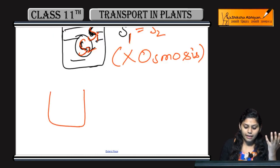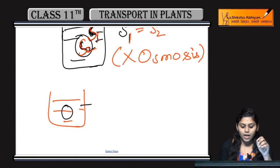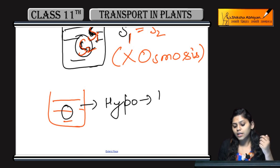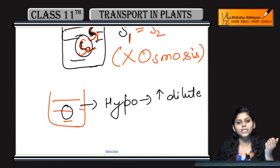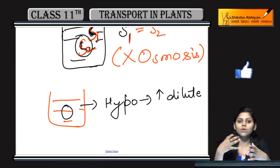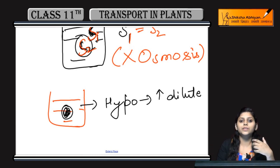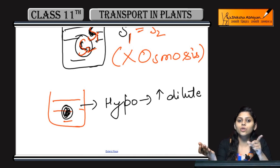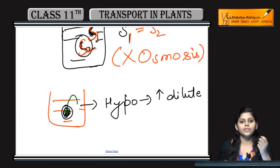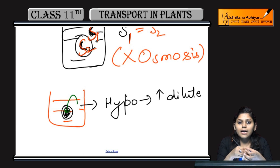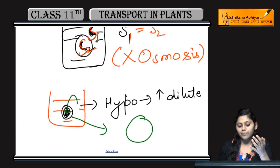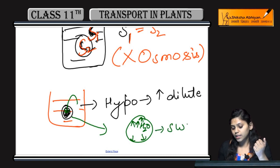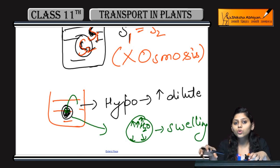Agar hypotonic condition hai — ek container hai, us mein solution present hai, aur us mein ek cell place kiya. Hypotonic solution woh hota hai jo zhaadha dilute solution hota hai. Is mein water ki concentration zhaadha hogi, solute kam hoga as compared to cell. Ab cell mein water ki concentration kam hai, toh osmosis mein water movement hoti hai from higher water potential to lower water potential. Toh bahar se water andar jayega. Cell mein paani zhaadha ho ga, cell swell kar jayega.